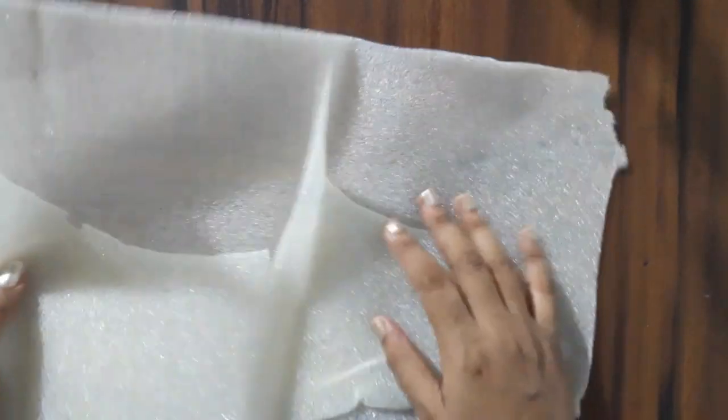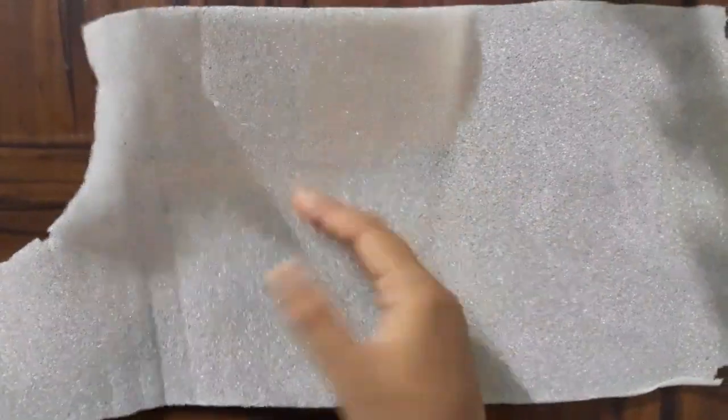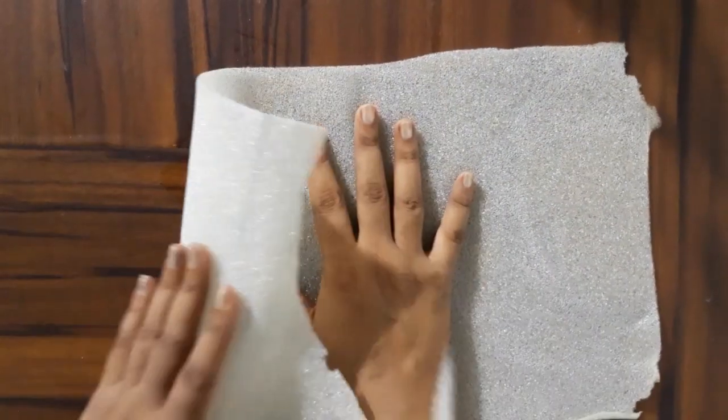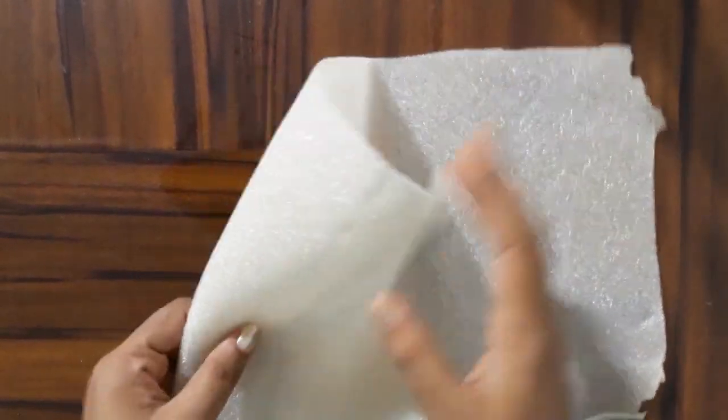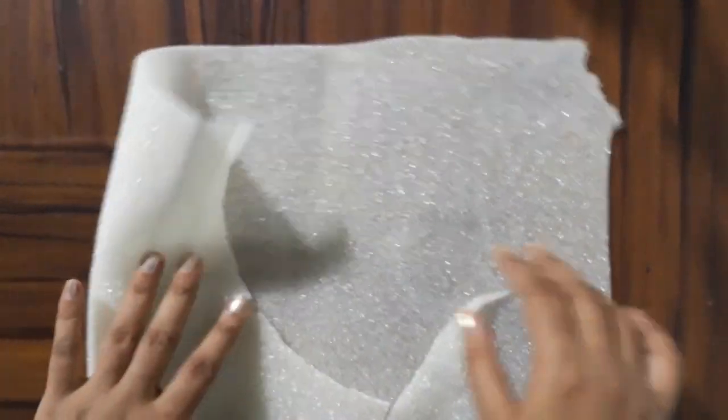You can buy a sponge sheet from any craft shop or online. Also, if you buy a new sofa you will get these inside. You can see that this sponge is very soft and it can be a very good bra pad.